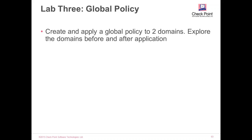In lab number three, we're going to work with global policies. You're going to create and apply a global policy, assign it to two domains, explore the domains before assigning the global policy and look at them afterwards. Try to publish on the global domain without reassigning the policy to local domains and see what happens. Then stay within the local domains and press reassign and see what happens.